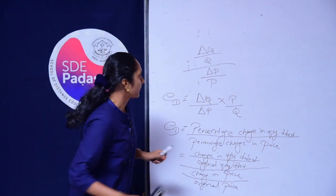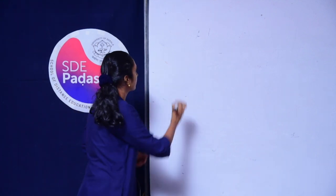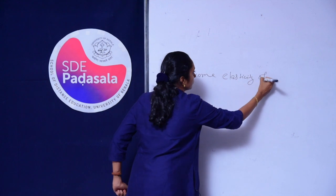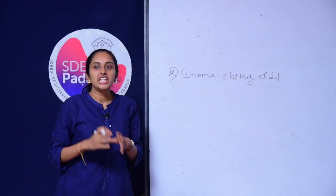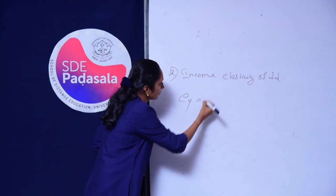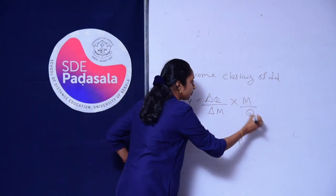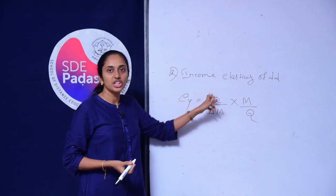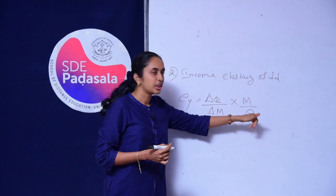Moving on to Income Elasticity of Demand. Like Price Elasticity of Demand, Income Elasticity of Demand measures the responsiveness of quantity demanded of a good to a change in the income of the consumer. We can calculate income elasticity using the formula: (delta Q / delta M) × (M / Q). Here, delta Q represents change in quantity demanded, delta M represents change in income of the consumer, M represents original income of the consumer, and Q represents original quantity demanded.